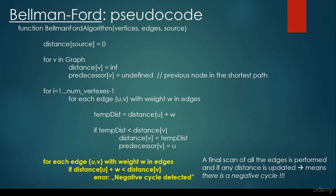And the final scan of all the edges is performed, and if any distance is updated, it means that there is a negative cycle. So that's why we have to make this final iteration and final check whether there is any better solution. And if there is, we know that there must be a negative cycle.